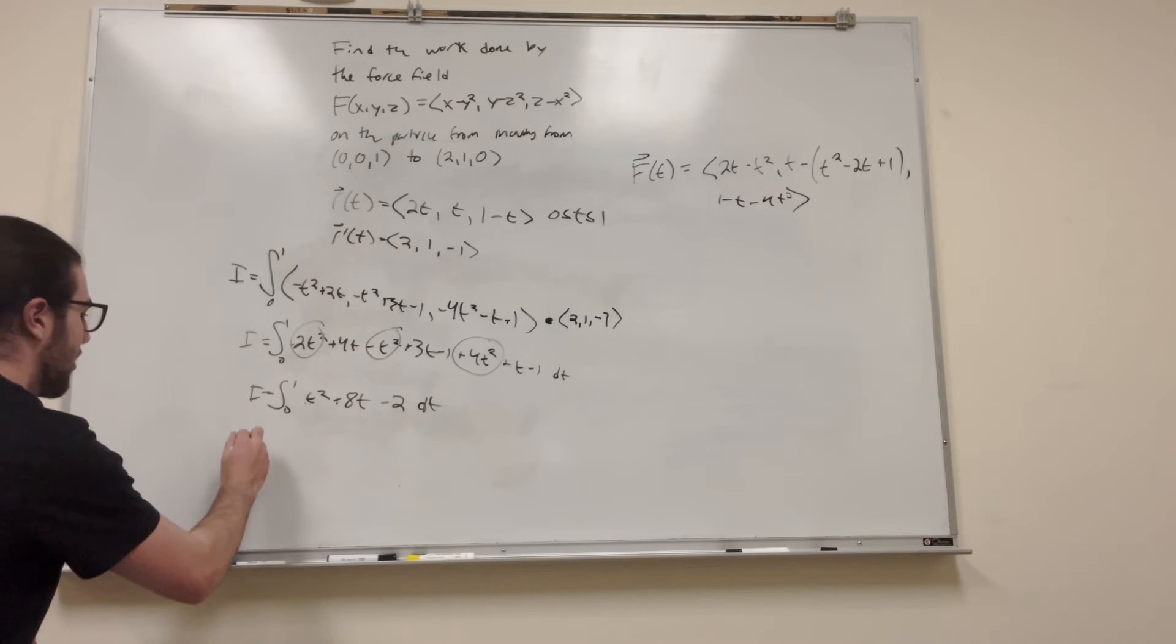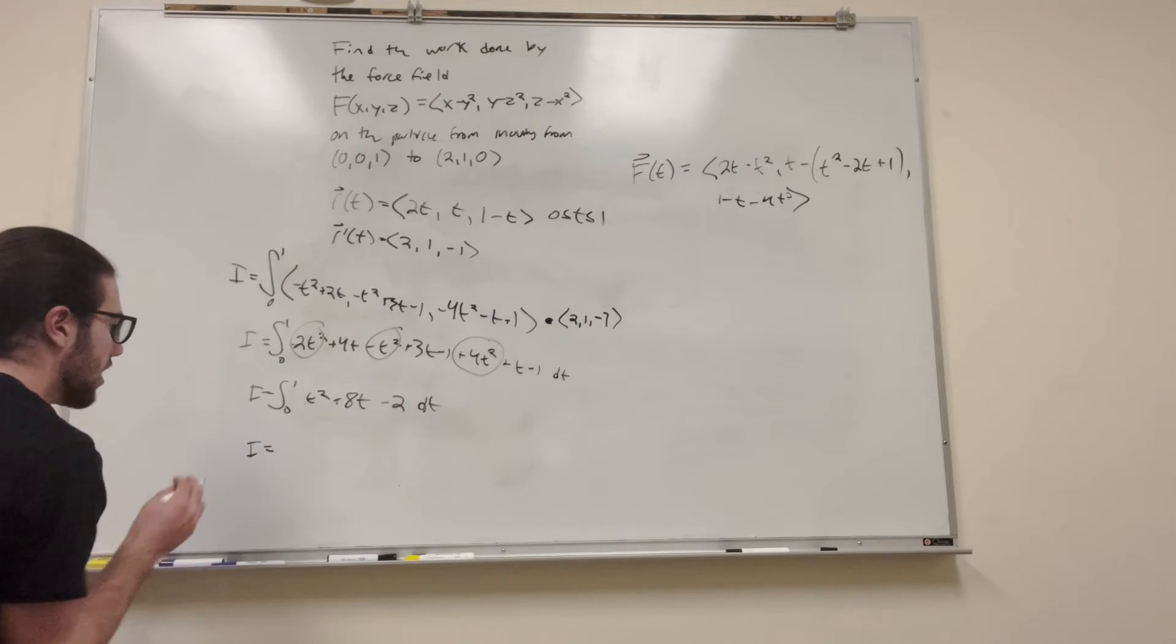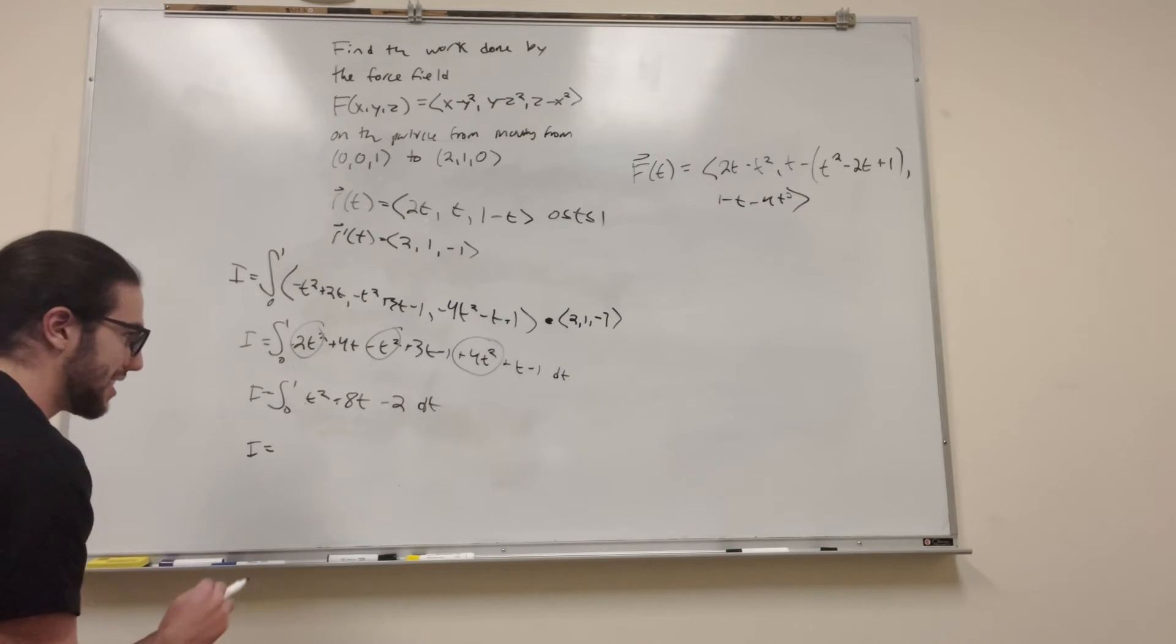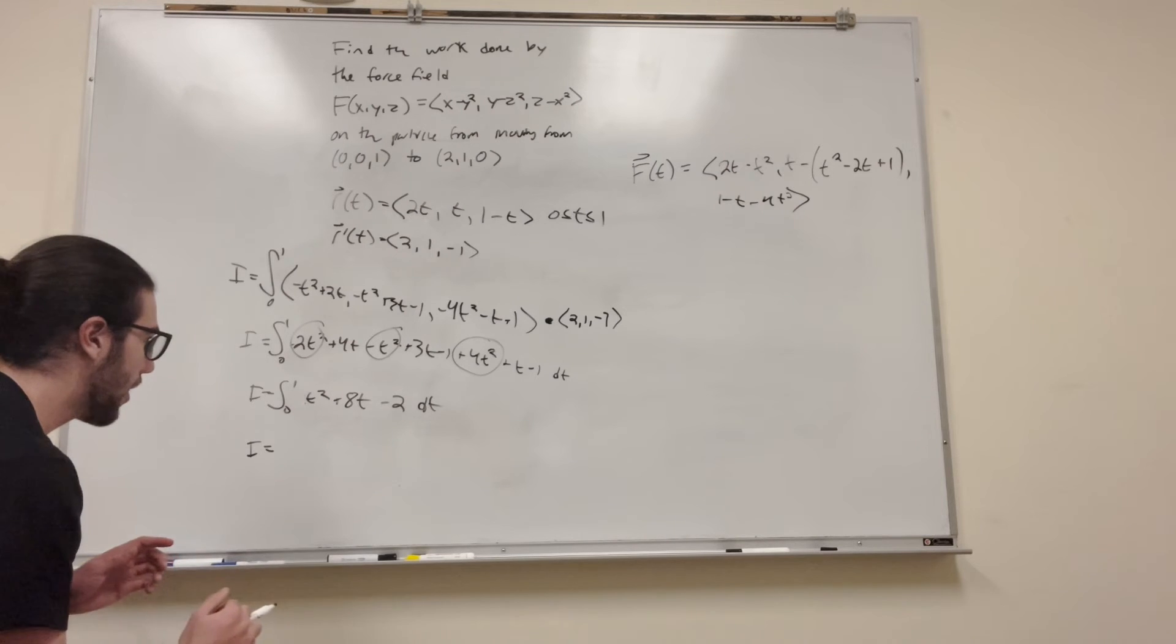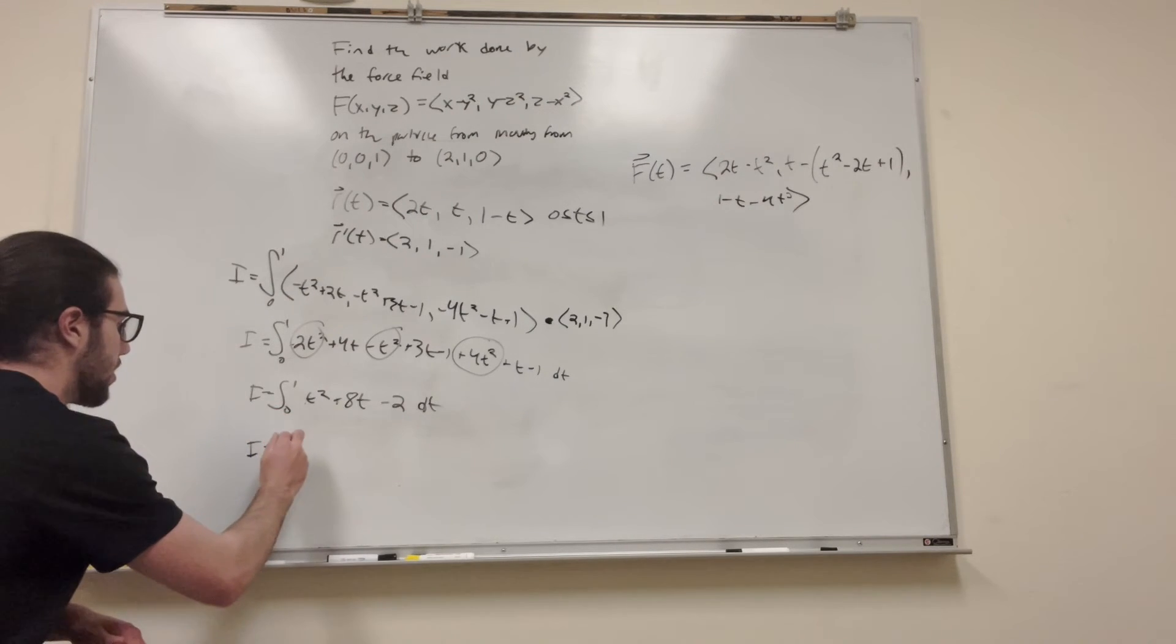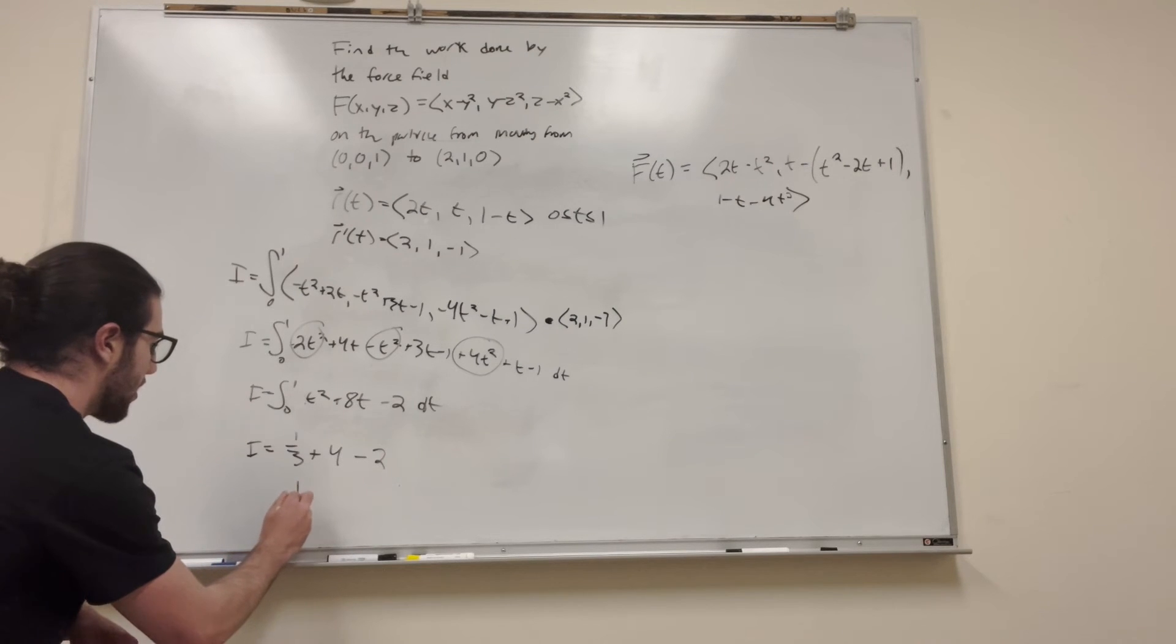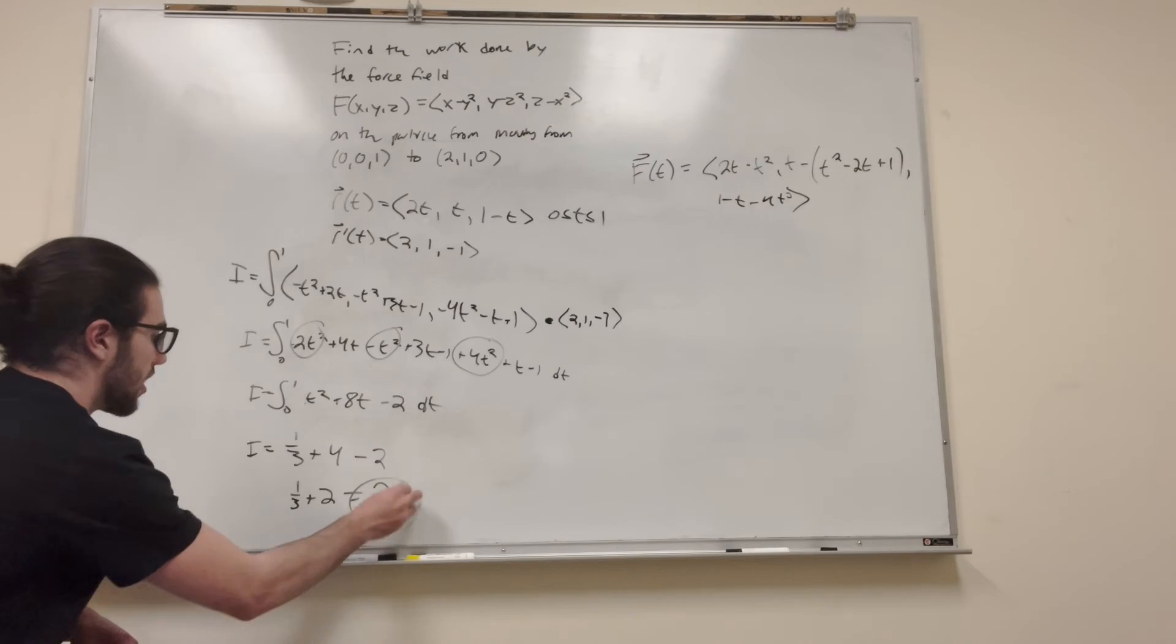So because it goes from 0 to 1, I'm just going to put in a 1 for all the Ts because I know at 0, it's going to be 0. And then at 1, it's just going to be 1. So it's going to be 1 third plus 4 minus 2. Right? And how do we solve this? So this is going to be 1 third plus 2, which is equal to 7 thirds. That's the answer.